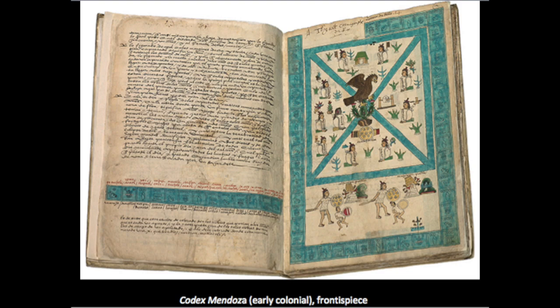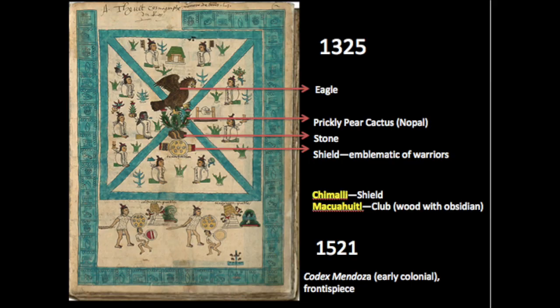Huitzilopochtli said you will come upon a prickly pear cactus — 'nopal' in Spanish — growing out of a stone, and on that cactus an eagle would be perched. Usually these depictions also include a serpent on the eagle's beak, but here that is not the case. Below that image is an emblem of warfare, consisting of a shield and a set of arrows — a glyph for a warrior or warfare.